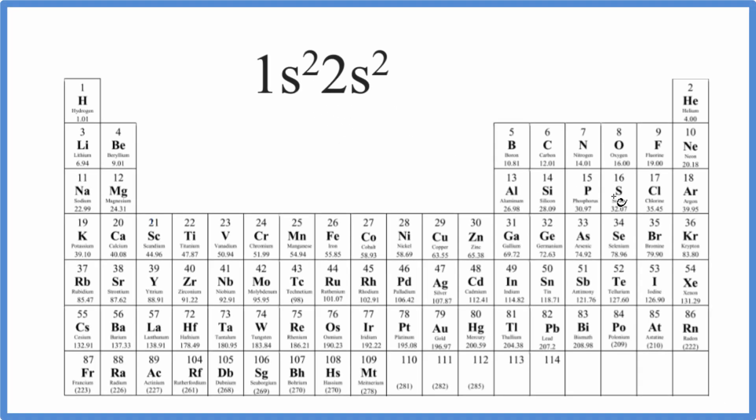In this video, we'll determine which element on the periodic table has the electron configuration 1s2, 2s2.